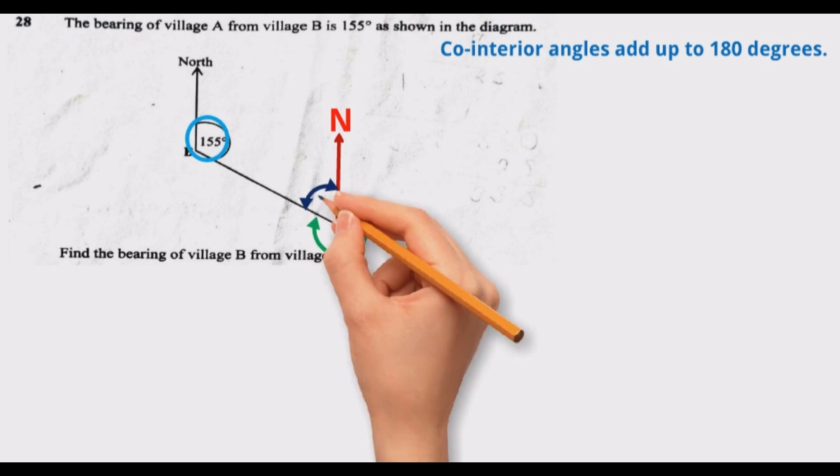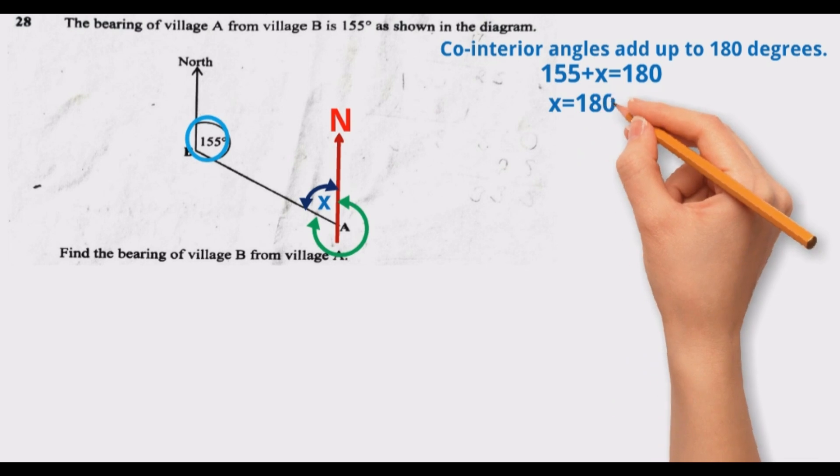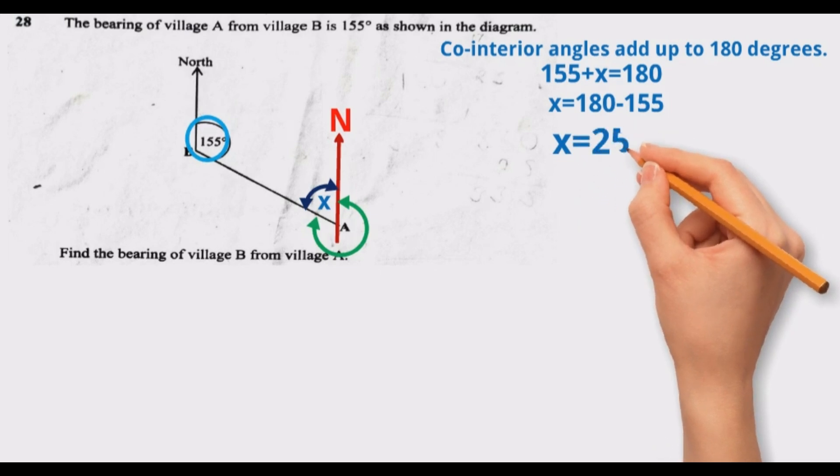So this angle, we're going to call it x. We say 155 degrees plus x is equal to 180 degrees. Then we find the value of x. We say x is equal to 180 degrees minus 155 degrees, which will give us 25 degrees.